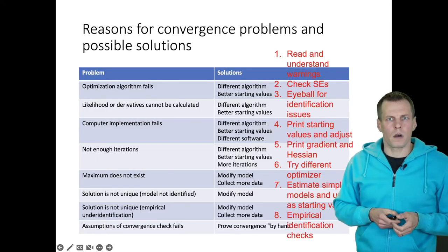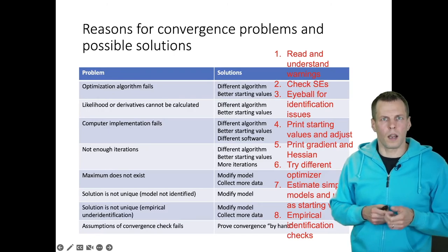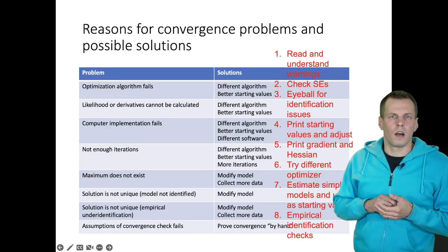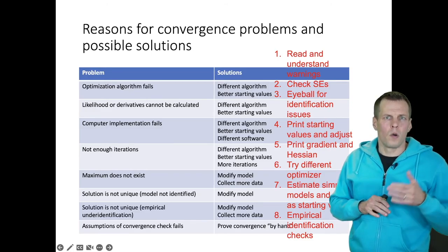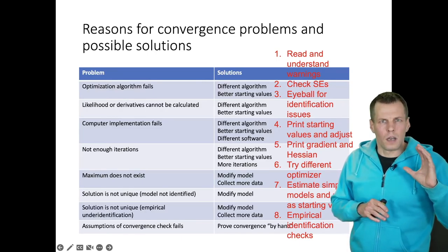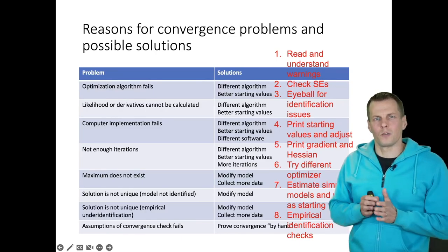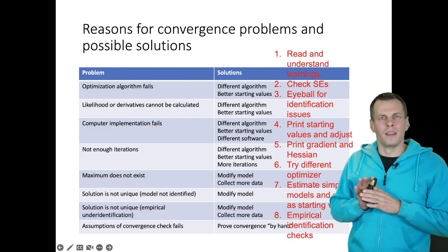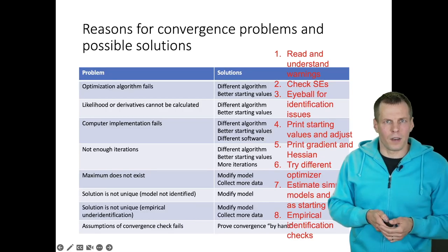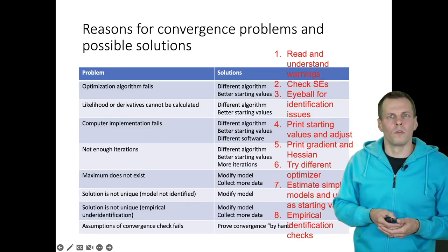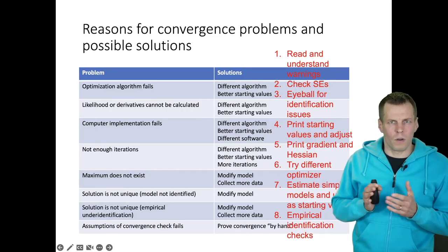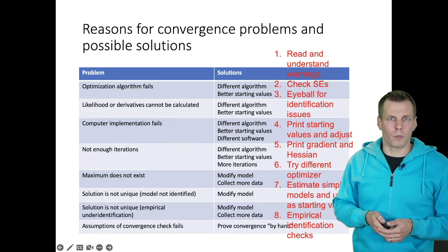Finally, this requires the most work. It's not rocket science but requires some effort: I would do empirical identification checks, where I estimate the model using randomly set starting values. That will tell me which parameters are not identified and which might be identified. This is my overall workflow of these various tools, and I adjust the workflow quite a bit depending on the background of the problem.